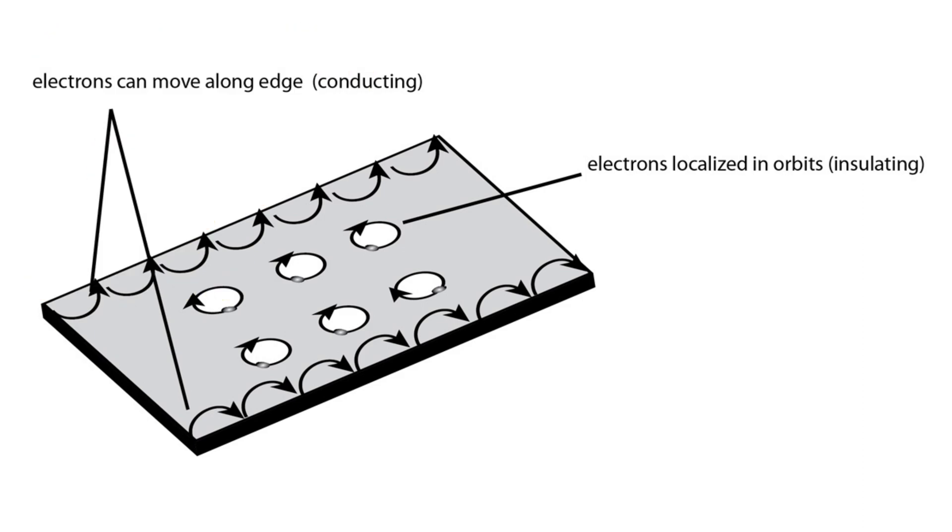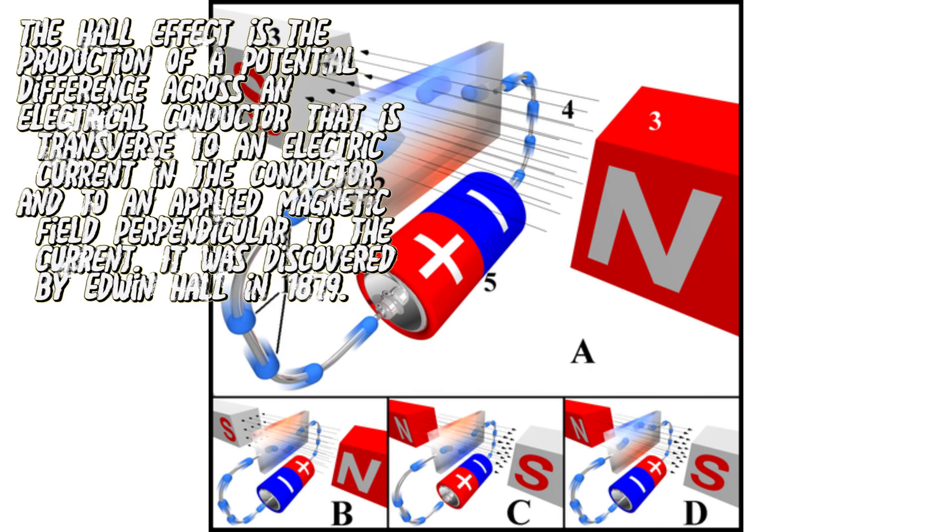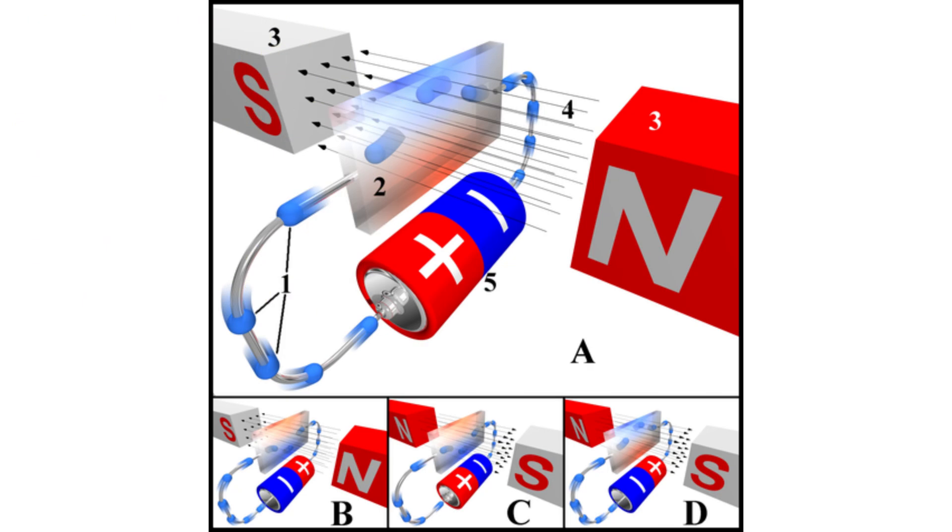Number five is quantum Hall state. A quantum Hall state gives rise to quantized Hall voltage measured in the direction perpendicular to the current flow.